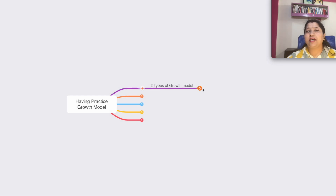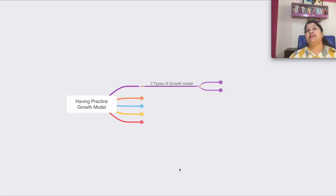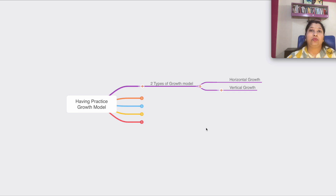So let's jump into the session. I'll give you two different ways of scaling or expanding your practice. There are two types of growth model that you can implement. You can select any one, or you can also implement both of them. The first type is horizontal growth. The second type is vertical growth.